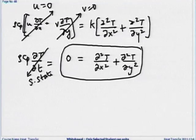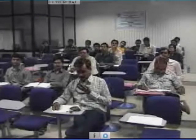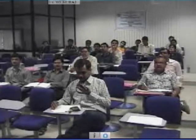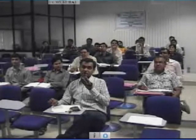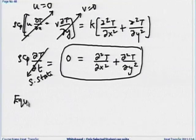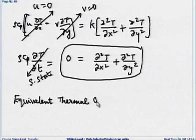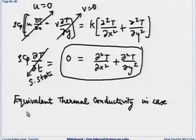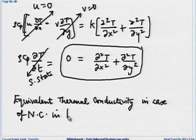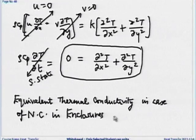Question from SVNIT Surat about natural convection in enclosed bodies: Most correlations for natural convection in enclosures involve an equivalent thermal conductivity, which itself comes from a correlation. Please post the specific problem on Moodle and we will provide a detailed answer.